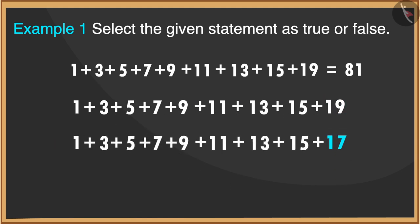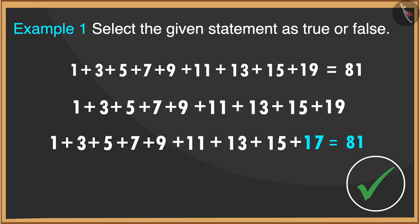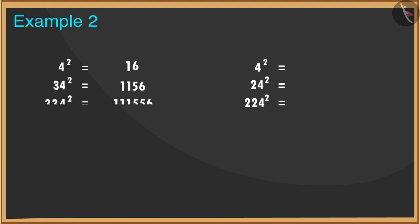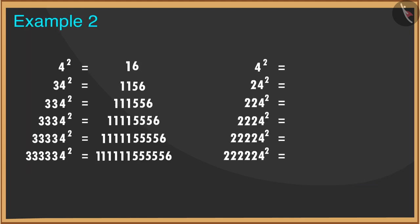If there was number 17 instead of 19, this statement would have been correct. Sometimes while estimating the squares of many numbers according to the pattern, students believe that it will be similar to the pattern of squares of other numbers. For example, look...